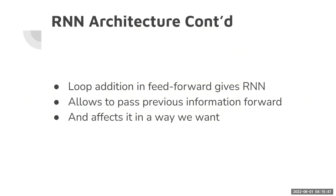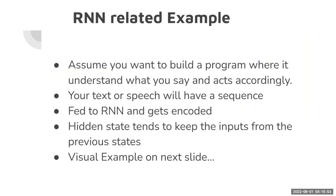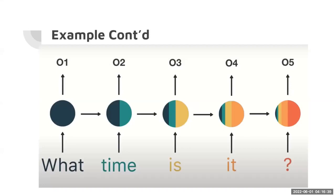For example, let's say you want to build a program where you want it to understand what you say and respond correctly. Whatever you ask has a sequence, so each word is fed to the RNN one by one, where it gets encoded into numbers because machines understand numbers. This all happens in the hidden state, which keeps information from previous steps as well. Once you pass to the third word, it will have information about the first and second word too. As you can see, the sentence 'what time is it?' is fed to the hidden state one by one, and the numbers are the encoded versions of the words.